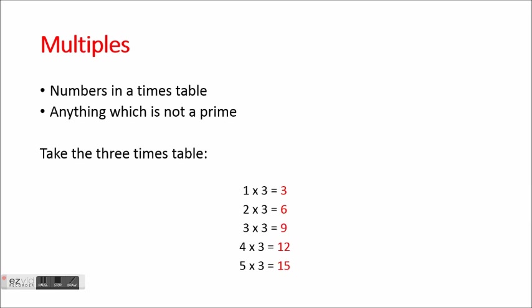Multiples are just the numbers in the times tables. So 1 times 3 is 3, 2 times 3 is 6, and so on. The multiples of 3 are 3, 6, 9, 12, 15, 18, and it goes all the way through the times tables. The multiples of 5, for instance, would be 5, 10, 15, 20, 25, and it just keeps going like that for every times table.